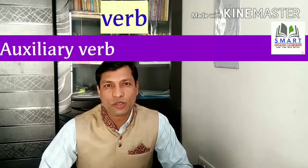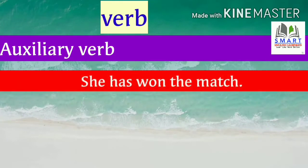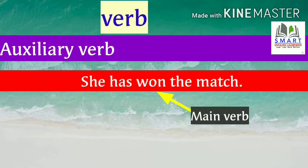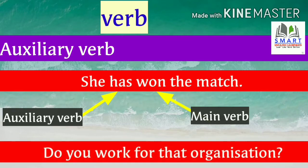Auxiliary verbs are also called helping verbs. For example, in the sentence 'she has won the match,' won is the main verb whereas has is the auxiliary verb. These auxiliary verbs add functional or grammatical meaning to the sentence. Another example: 'Do you work for that organization?' Here, work is the main verb and the auxiliary verb do helps us to frame a question. It adds functional and grammatical meaning.